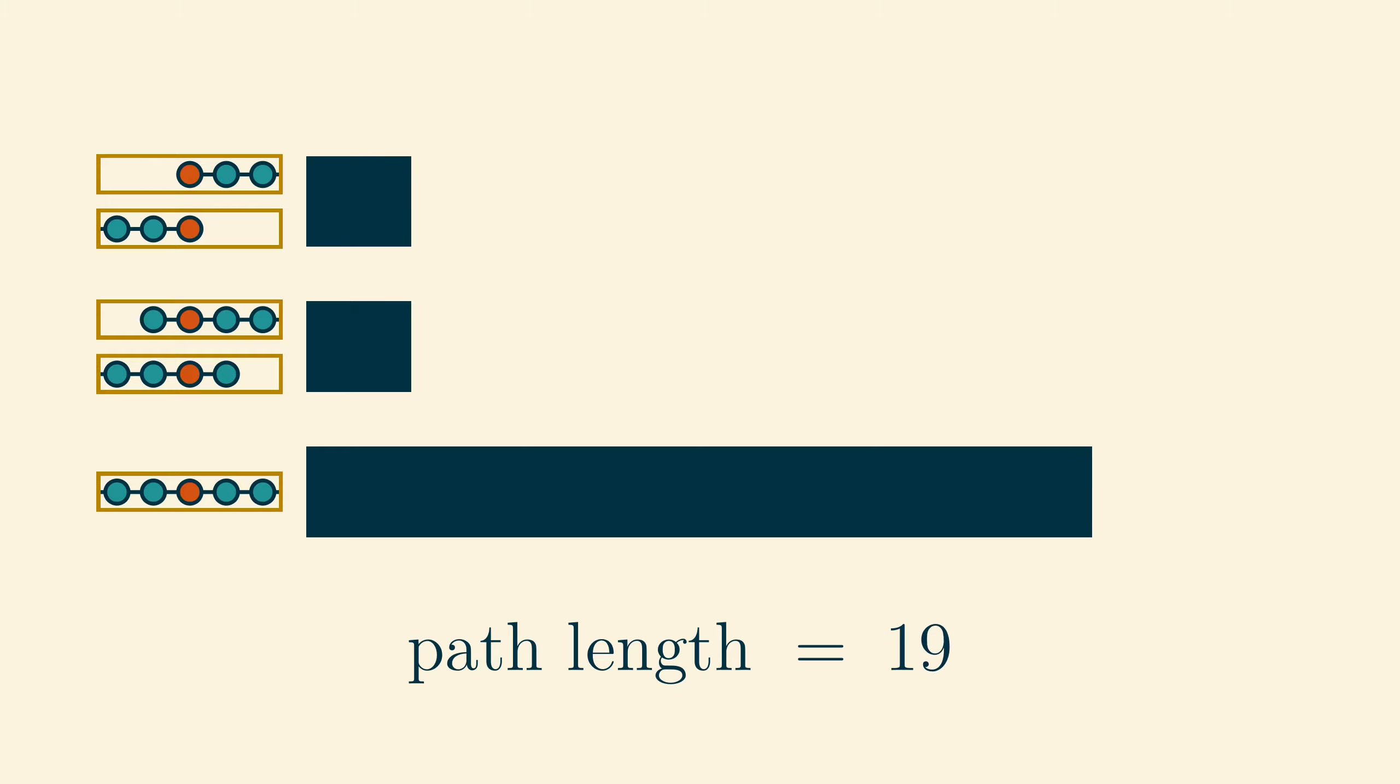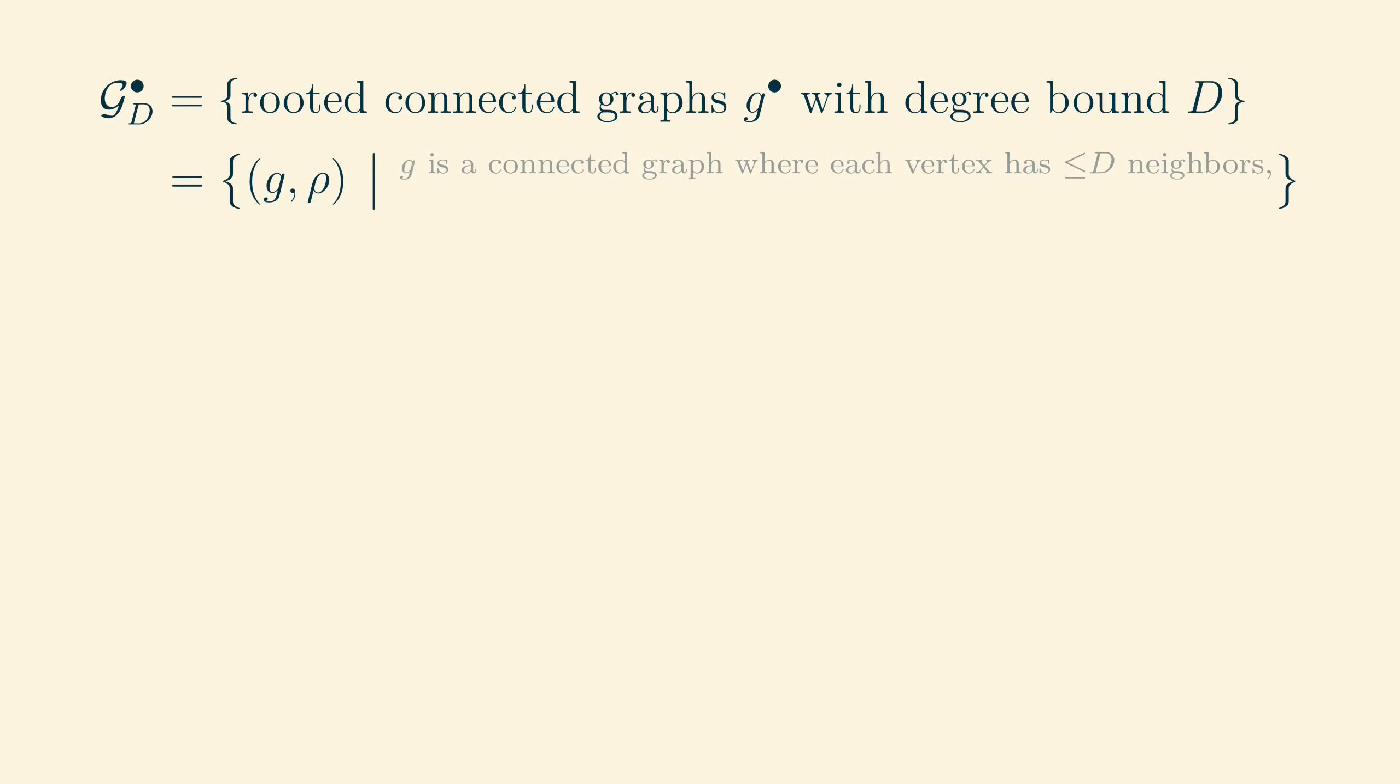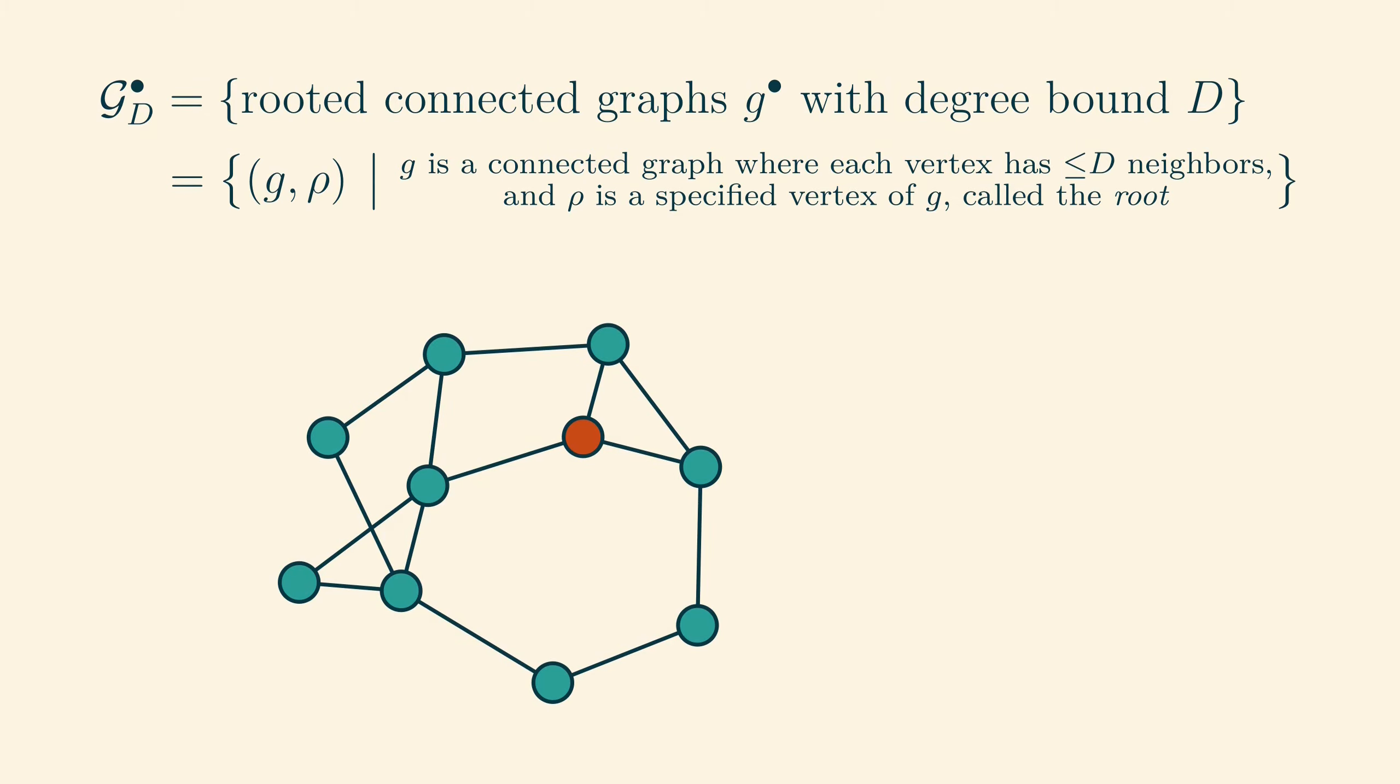In this experiment, we examined small neighbourhoods around a certain vertex and we sampled that vertex randomly to get a statistical picture of the graph as a whole. But how do we formalize this into a consistent theory that will work for all sparse sequences of graphs and not just the path graphs? First, we will consider a set gd dot of rooted connected graphs which are denoted g dot. In this video, our sparseness condition will be that the degrees of the graphs in question are bounded by some integer called d. We will also denote these rooted graphs by pairs (g, ρ), where g is a connected graph where each vertex has not more than d neighbours and ρ is a specified vertex of g called the root. Here is an example of a rooted graph. The highlighted vertex is the root.